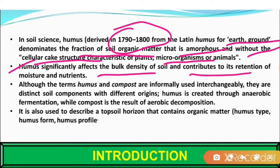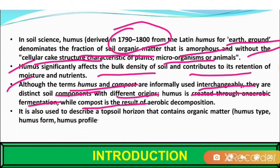Although the terms humus and compost are informally used interchangeably, they are distinct soil components with different origins. Humus is created through anaerobic fermentation, while compost is the result of aerobic decomposition. Humus is also used to describe the top soil horizon that contains organic matter, which includes humus type, humus form, and humus profile.